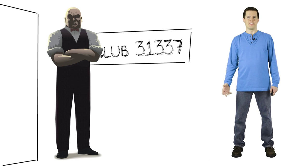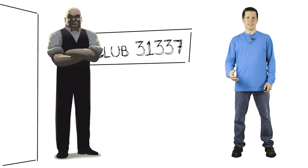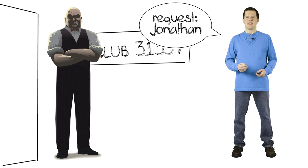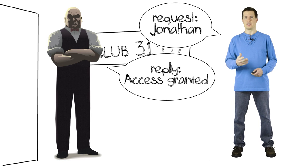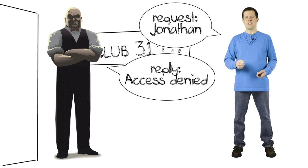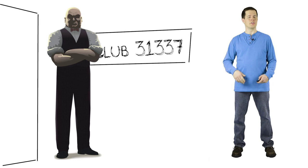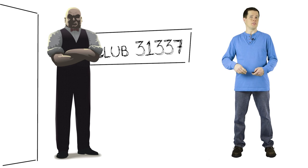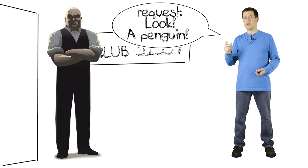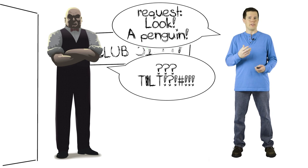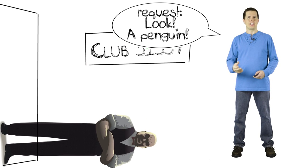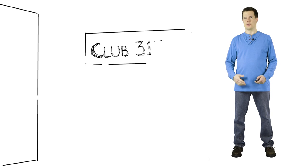Here's a simple analogy for how fuzzing works. If you want to get into a swanky nightclub, there's a bouncer standing outside. The standard protocol is: you walk up, send him a message with your name, and he checks his list and responds yes or no. If you're going to fuzz test this guy, you do something invalid — you point off to the side and say 'look, a penguin.' If he goes and looks, or faints in surprise, and you gain access to the club, you've discovered a vulnerability.